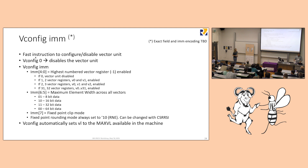One thing that is certain: vconfig zero will disable the vector unit, so the compiler can emit vconfig zero and the architecture will trap on any subsequent vector instruction — enabling power savings. When vconfig is called, registers are not preserved; the implementation can use a single dirty bit per register to make vconfig fast in one clock.